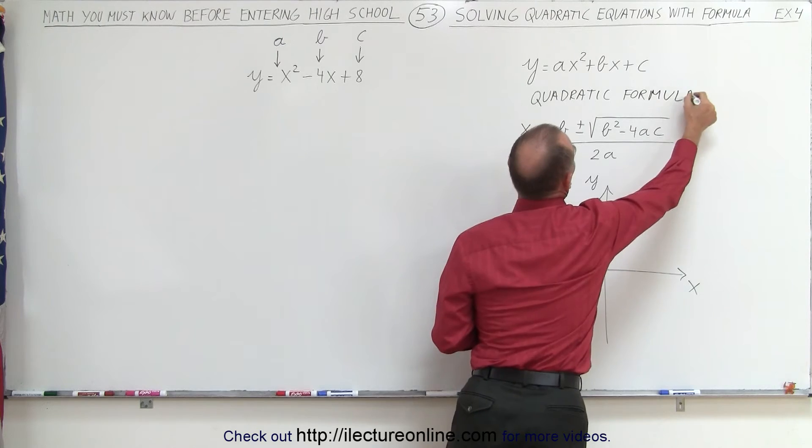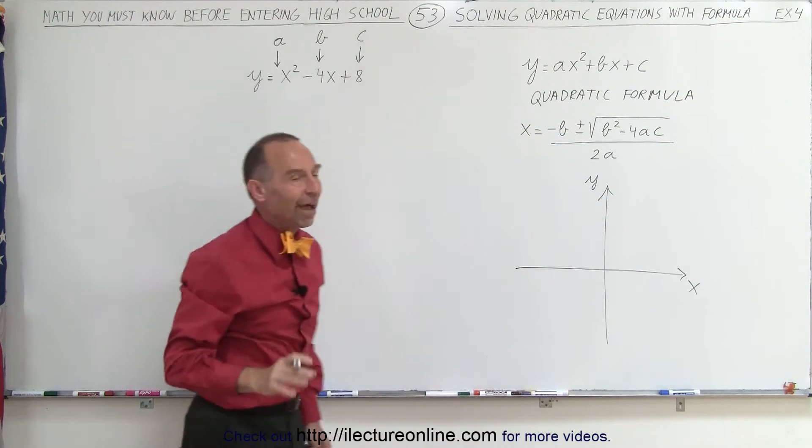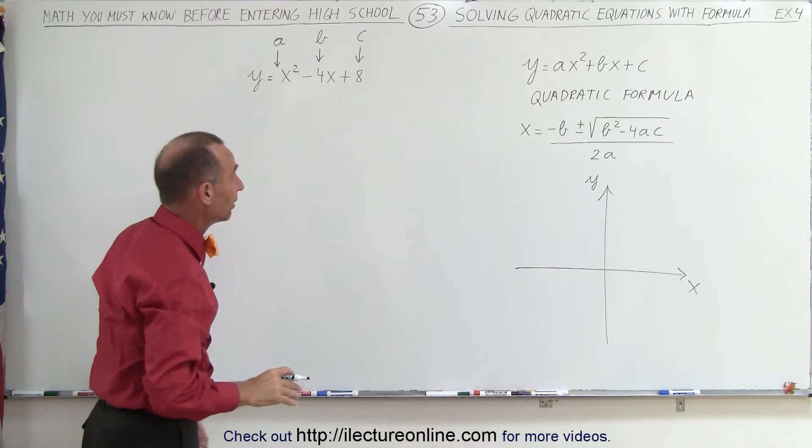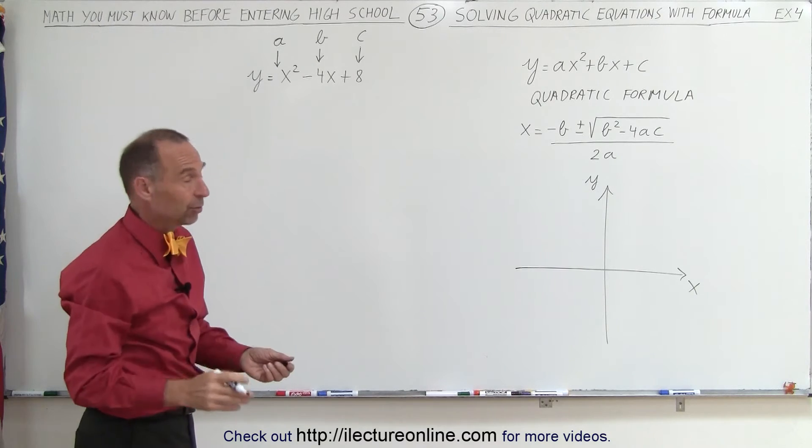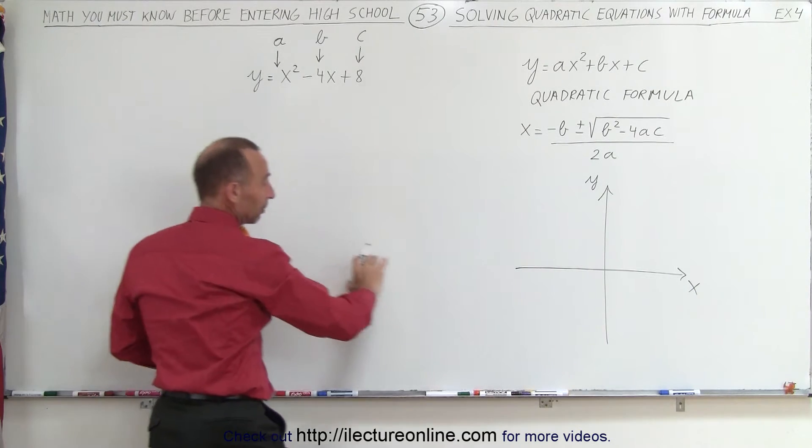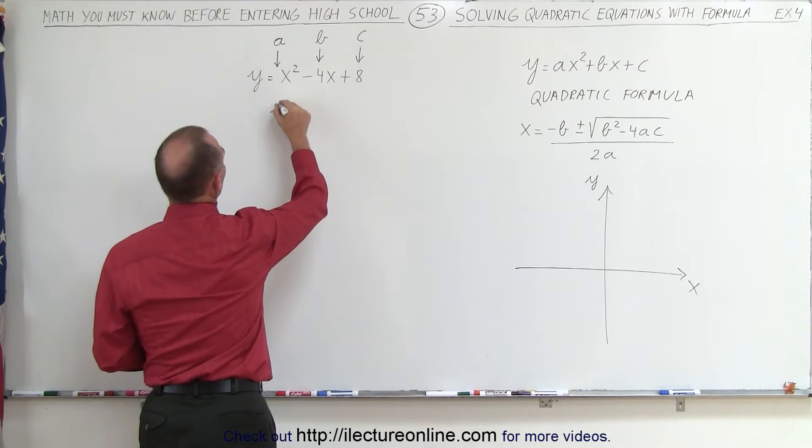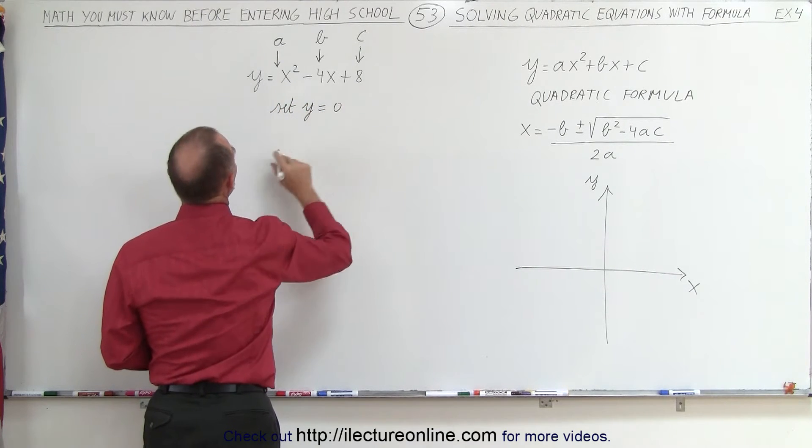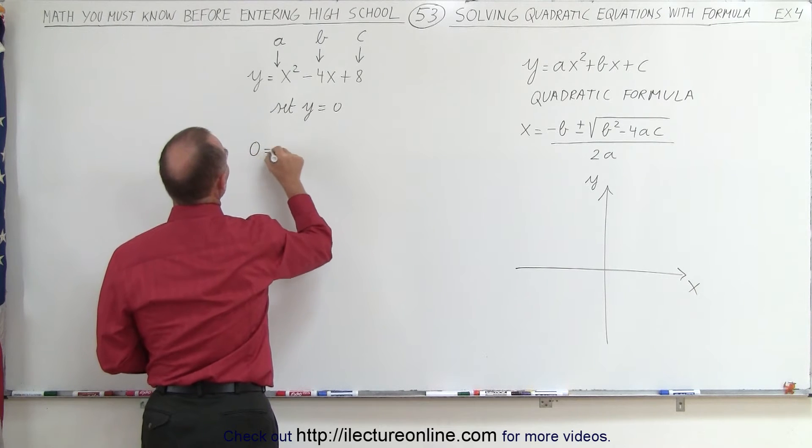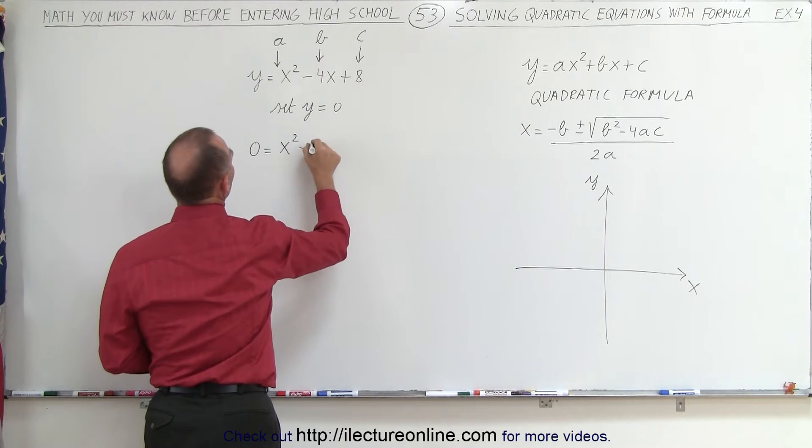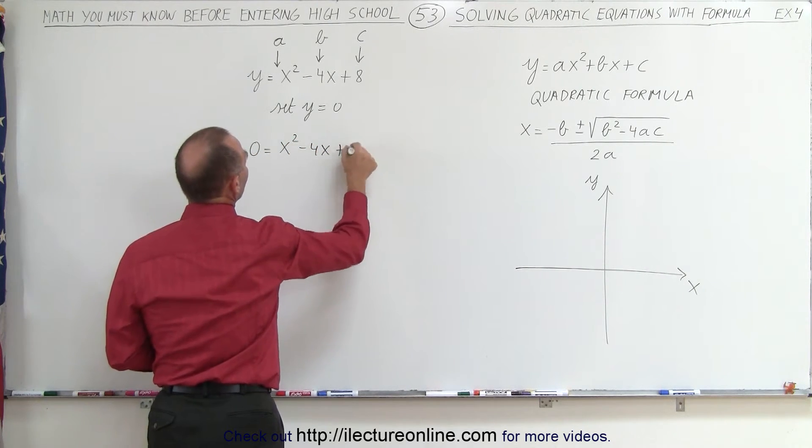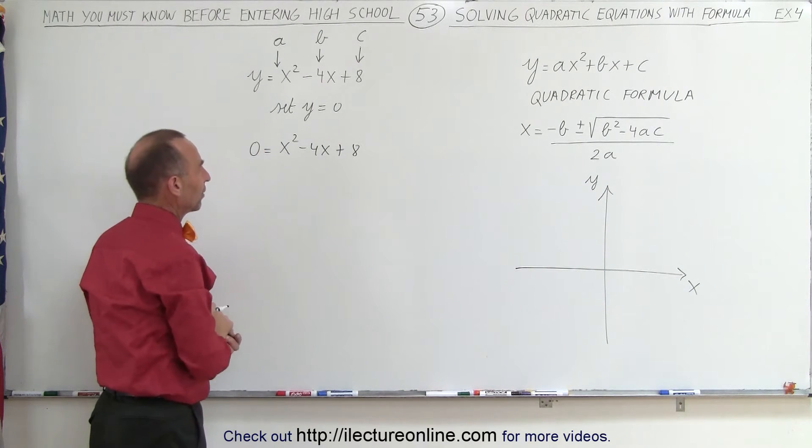But first what we're going to do is we're going to try and solve it using factoring, because that's what we've done so far, and that usually works pretty nice if it's factorable. So in order to find the places where it crosses the x-axis, we're going to set y equal to 0. Set y equal to 0, and now we get 0 is equal to x squared minus 4x plus 8, and now we're going to try to factor that.